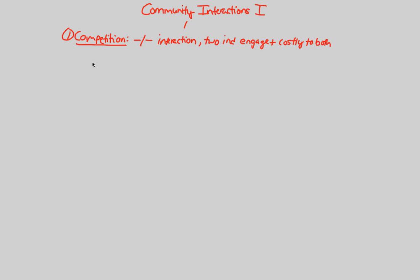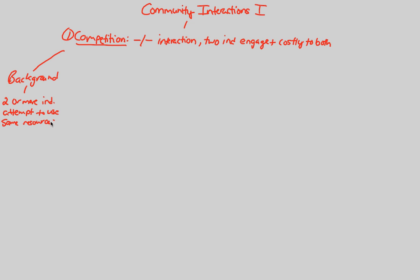When we think of competition, we also have to look at a couple of key ideas specific to competition in regards to where it's occurring, covered in this short background section. Competition is mainly going to be defined as when two or more individuals attempt to use the same resources. Resources are key in community ecology — when two or more individuals attempt to use the same resources, that's when we have competition.